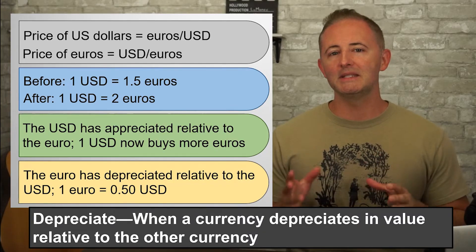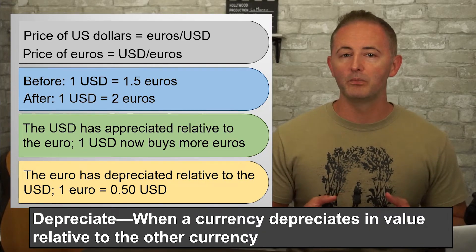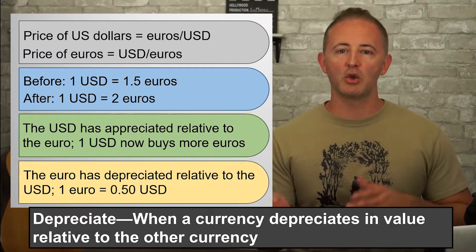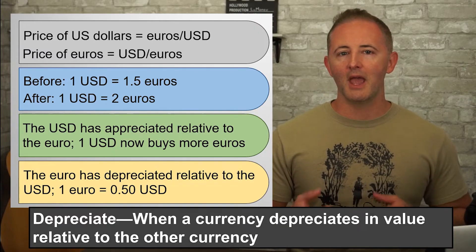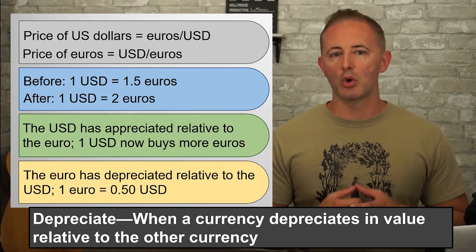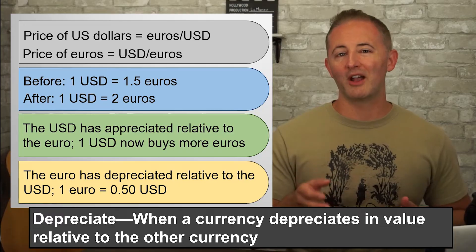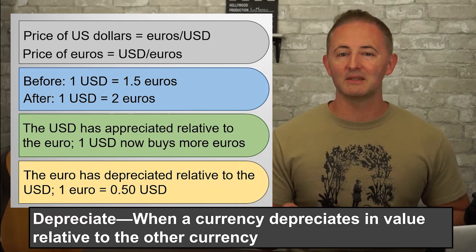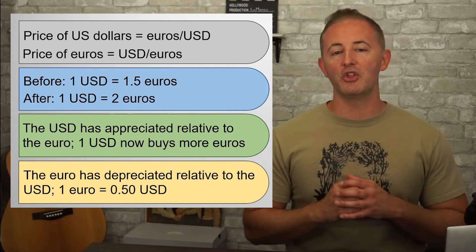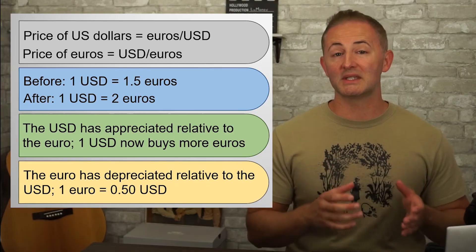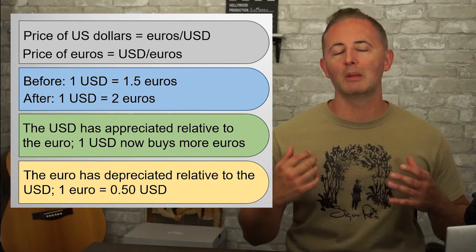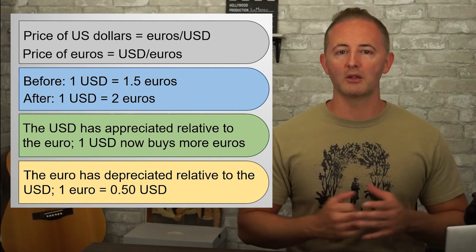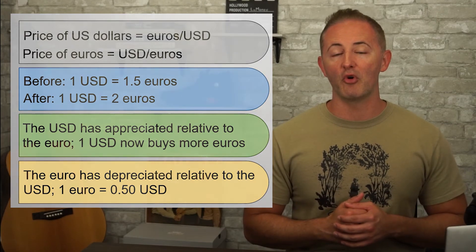And we can easily see this if we do the calculation. Once the exchange rate changes to $1 for 2 euros, how much is the euro worth in dollars? 1 divided by 2 equals 50 cents. Recall that previously the euro was worth 67 cents, so it has become less valuable. 1 euro buys fewer dollars than it bought before.